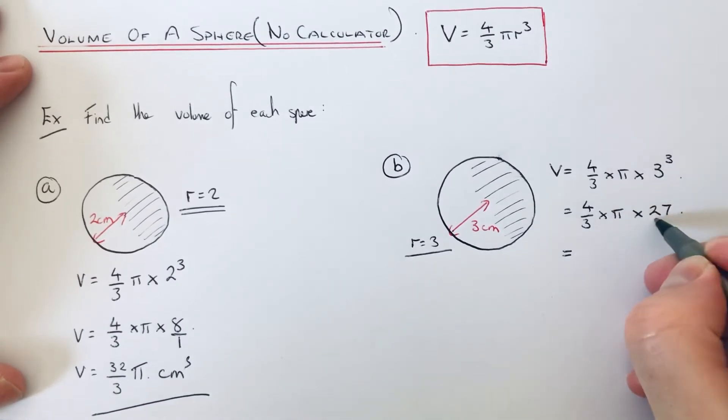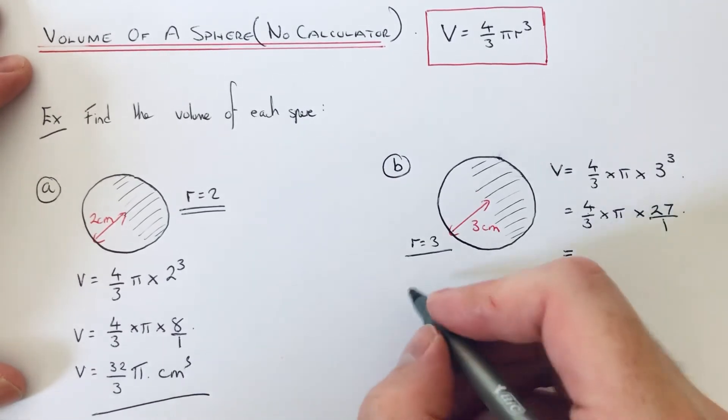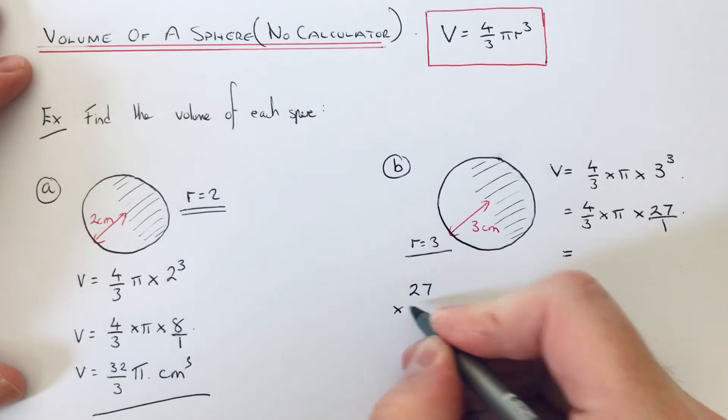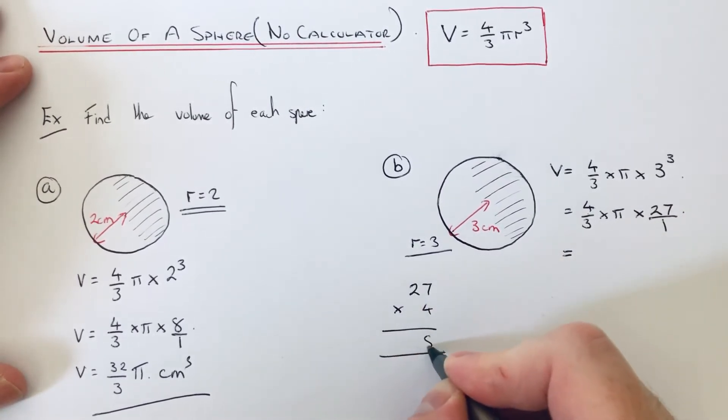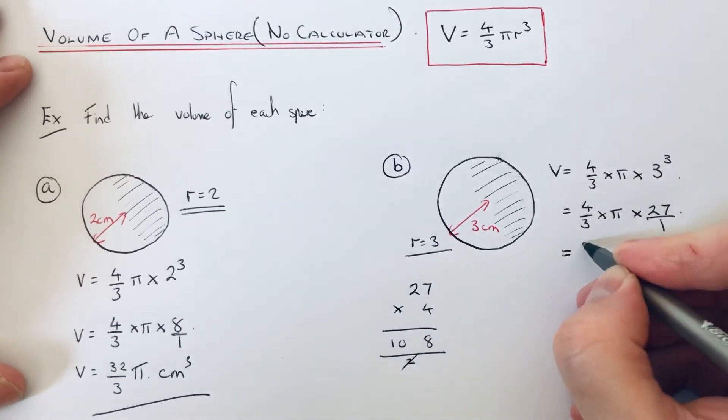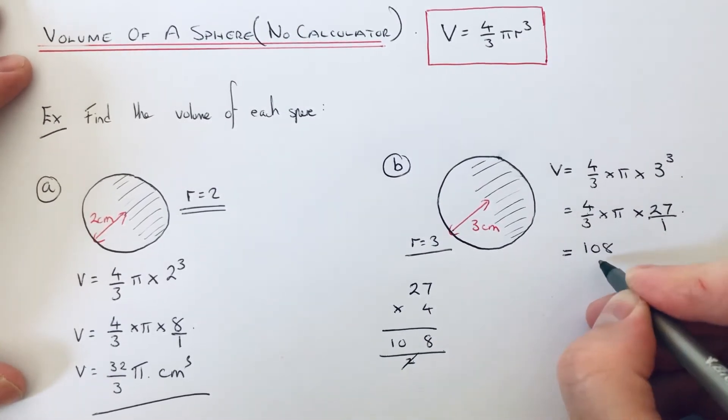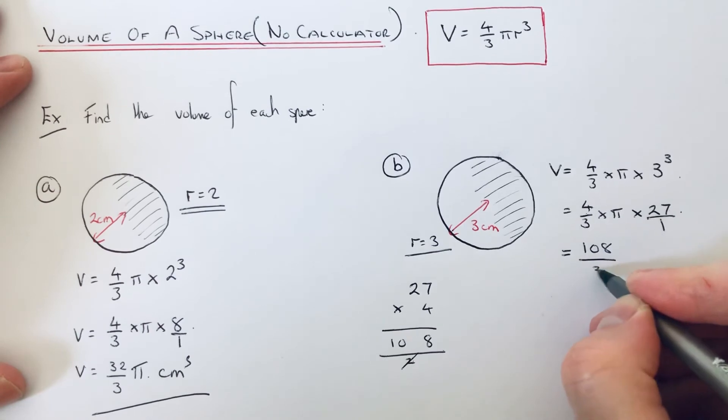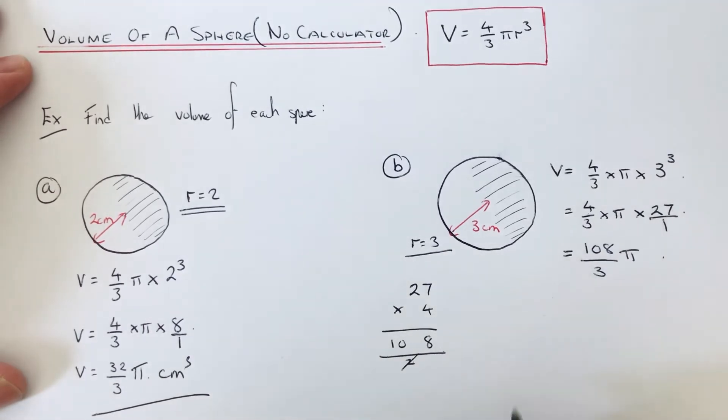Again, we can multiply our fraction by the whole number. 4 × 27, we can work that out on the side of the page. 7 × 4 is 28, 2 × 4 is 8, plus the 2 is 10. So we get 108, and 3 × 1 is 3. Put the pi on at the end.